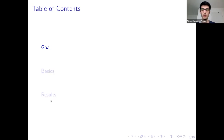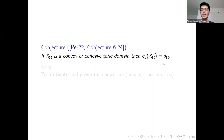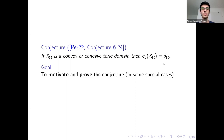Let's see what the conjecture is. This conjecture states that if X is a convex or concave toric domain, then its Lagrangian capacity is equal to delta, where delta is a number I'm going to define later and I will usually call it the diagonal. Our goal today would be to motivate this conjecture, to explain why we should believe it is true, and after that to prove it at least in some special cases.